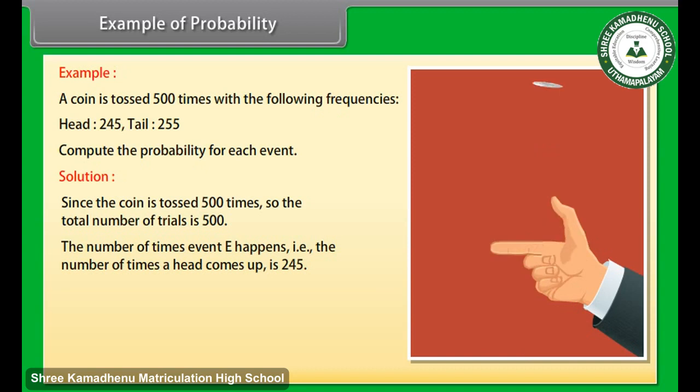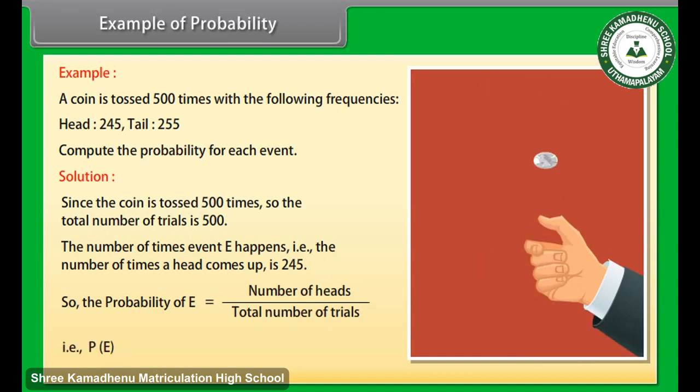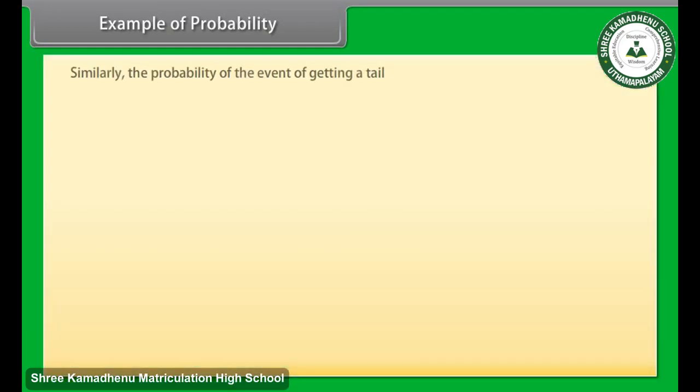The number of times event E happens, that is the number of times a head comes up, is 245. So the probability of E is equal to number of heads upon total number of trials. That is, P(E) equals 245 upon 500 equals 0.49.